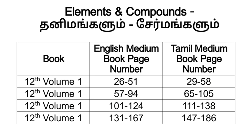In the 12th Chemistry Volume 1 book, English Medium is page number 26 to 51, and Tamil Medium is page number 29 to 58. For P-block Elements in the 12th Volume 1 book, English Medium is page number 57 to 94, and Tamil Medium is page number 65 to 105. For Transition and Inner Transition Elements, English Medium is page number 101 to 124, and Tamil Medium is page number 111 to 138.